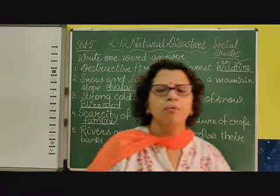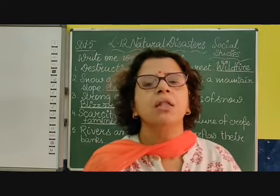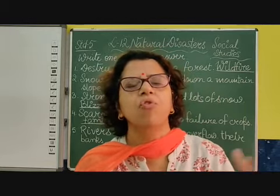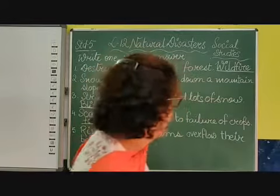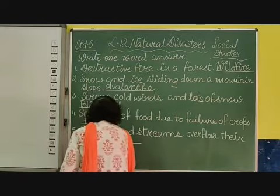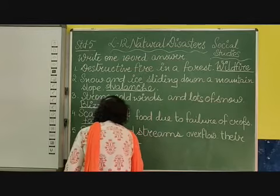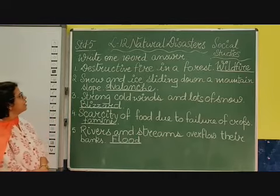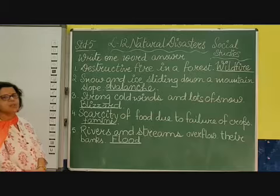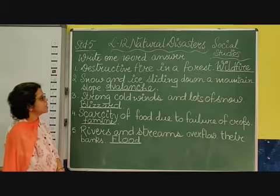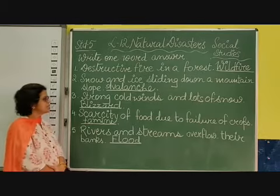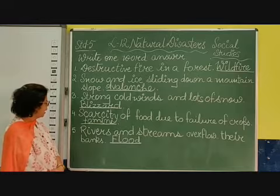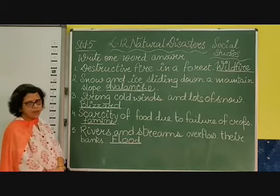When rivers and streams overflow their banks — when they get heavy rainfall for many days, the water level rises and they overflow the banks — this causes flood. It is flood. So to recap: destructive fire in a forest — wildfire; snow and ice sliding down a mountain slope — avalanche; strong cold winds and lots of snow — blizzard; scarcity of food due to failure of crops — famine; rivers and streams overflow their banks — flood.